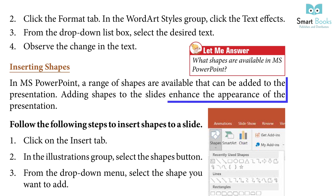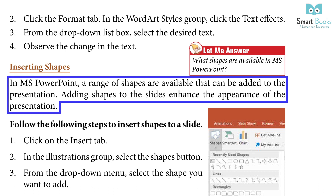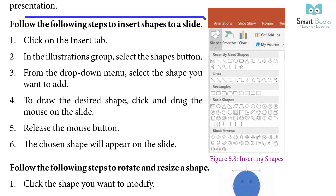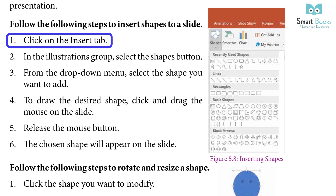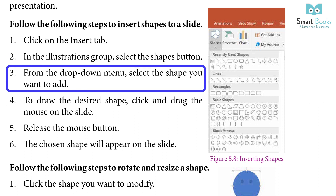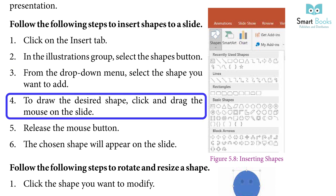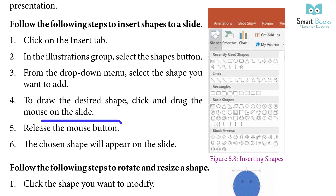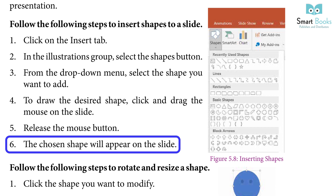In MS PowerPoint, a range of shapes are available that can be added to the presentation. Adding shapes to the slide enhances the appearance. To insert shapes: click on the Insert tab, in the Illustrations group select the Shape button, from the drop-down menu select the shape you want, click and drag the mouse on the slide to draw it, release the mouse button, and the chosen shape will appear on the slide.